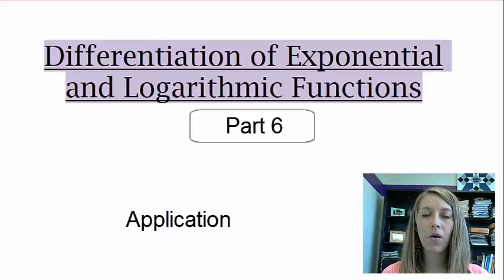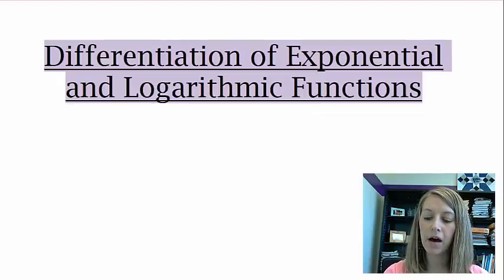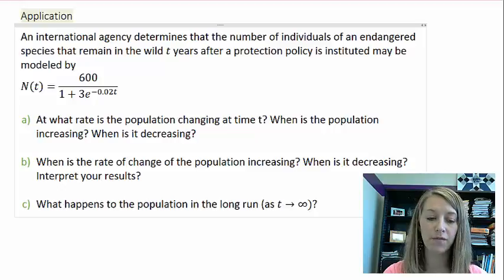And the last video over differentiating exponential and logarithmic functions. And so this is our application video. An international agency determines that the number of individuals of an endangered species that remain in the wild t years after a protection policy is instituted may be modeled by this formula here, N(t) equals 600 over 1 plus 3e to the negative 0.02t.